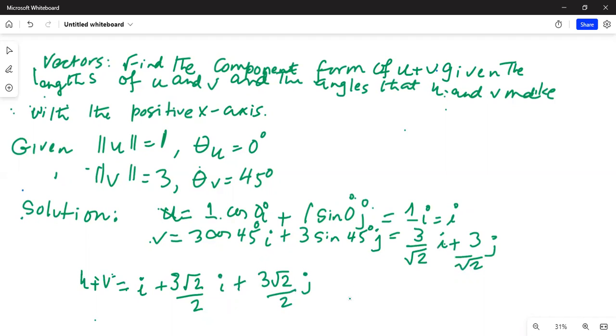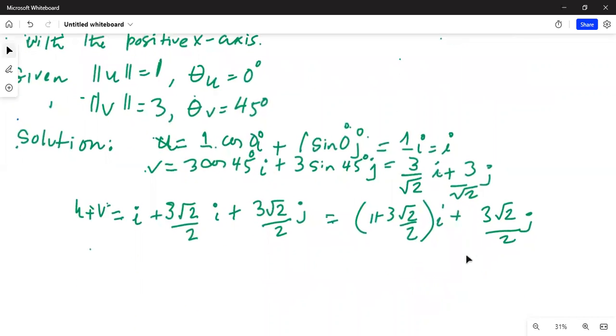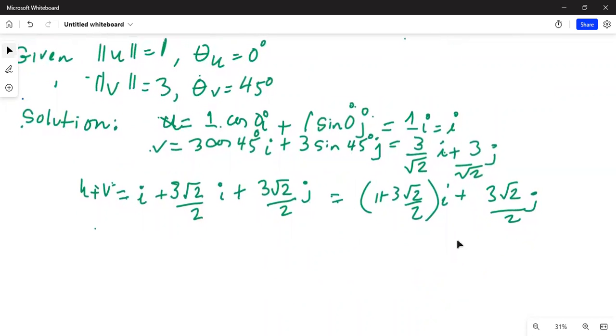This can be further simplified as 1 plus 3 square root of 2 over 2 i plus 3 square root of 2 over 2 j.